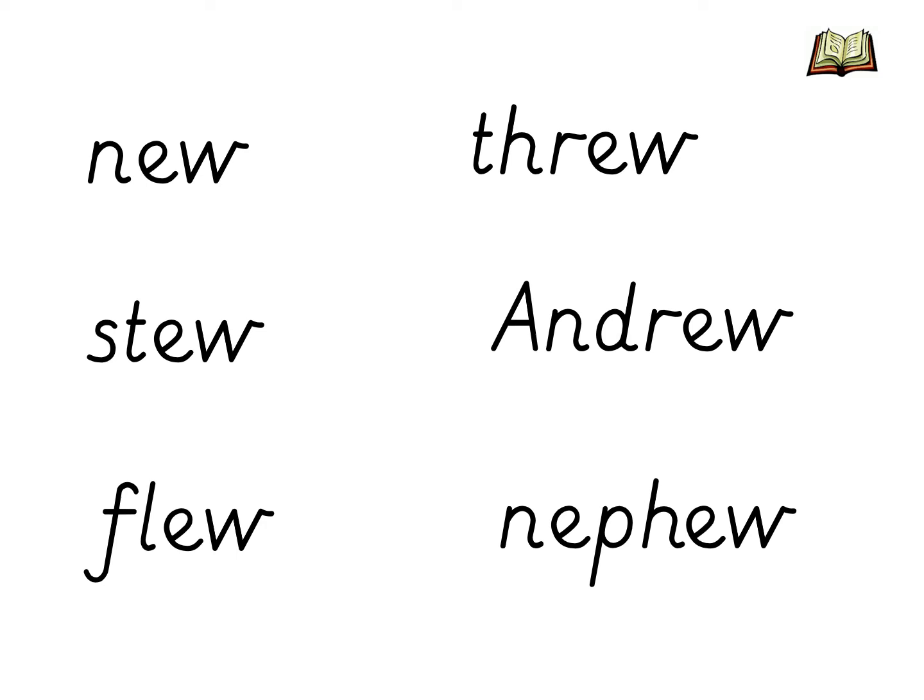It is time for us to practice reading words that have the OOO and YOU sound in them. Look at these six words. What do you notice about the position of the OOO and YOU digraph in each of these words? It is usually at the end of a word. I would like you to pause the video and read each of these words, then click play once you've done it.